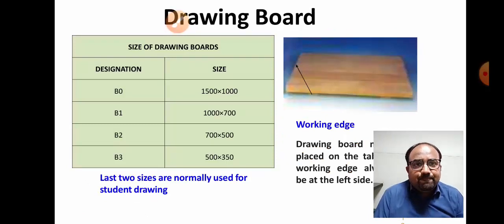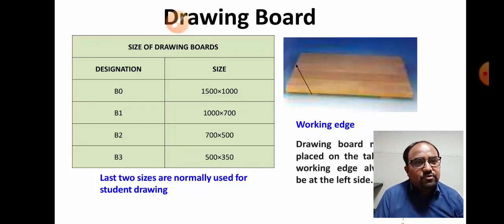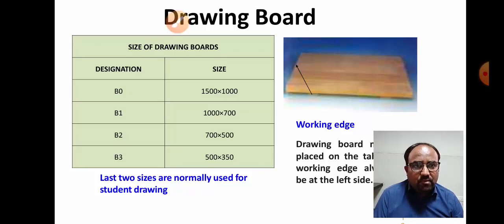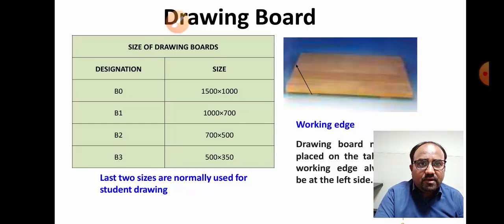The first instrument is the drawing board. We generally use four types of drawing board. The size of the drawing board depends on the size of the drawing sheet. The four sizes are: B0 (1500 by 1000 mm), B1 (1000 by 700 mm), B2 (700 by 500 mm), and B3 (500 by 350 mm).